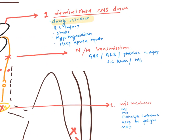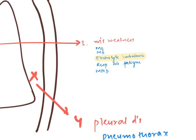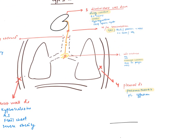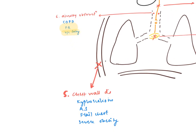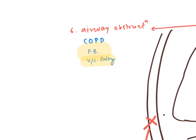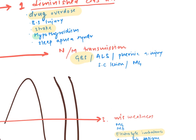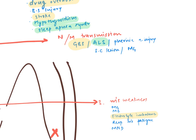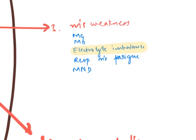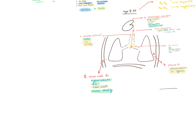Differentiating acute from chronic type 2 causes: acute causes include drug overdose, stroke, GBS, electrolyte imbalance, pneumothorax, pleural effusion, foreign body, vocal cord palsy, and flail chest. Chronic causes include COPD (with possible acute exacerbation), kyphoscoliosis, ankylosing spondylitis, hypothyroidism, sleep apnea syndrome, ALS, myasthenia gravis, muscular dystrophy, motor neuron disease, and severe obesity.